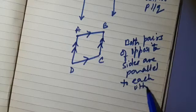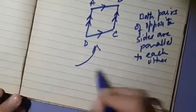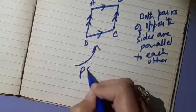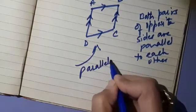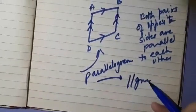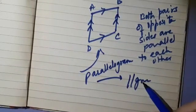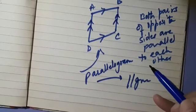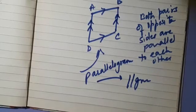Again there is a special name for this quadrilateral — such quadrilaterals are named as parallelogram. There is also a symbol for it: we write the parallel symbol followed by GM. So what is a parallelogram? It is clearly a quadrilateral.